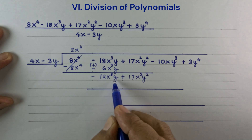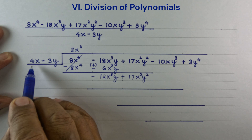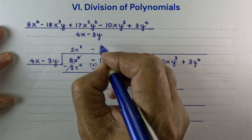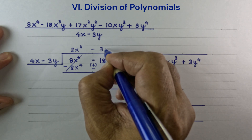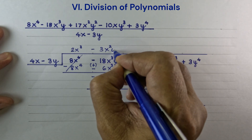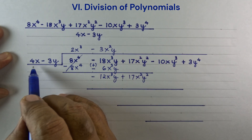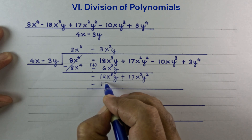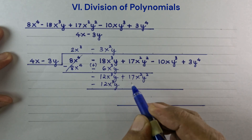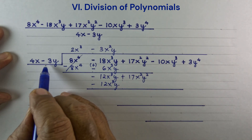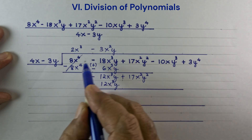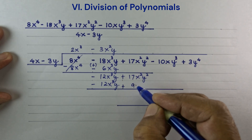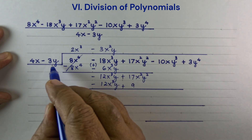Minus 12x cubed y divided by 4x is minus 3x squared y. Minus 3x squared y times 4x is minus 12x cubed y. Minus 3x squared y times minus 3y is plus 9x squared y squared.